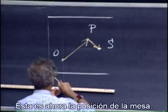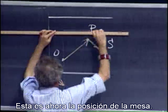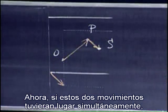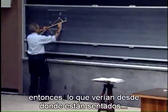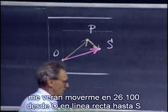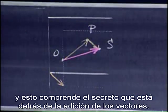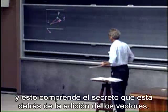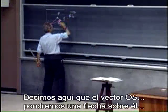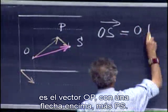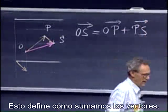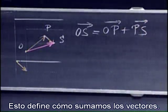This is now the position of the table — the whole table has shifted. If these two motions take place simultaneously, then what you will see from where you're sitting is me move in 26100 from O in a straight line to S. And this holds the secret behind the adding of vectors. We say here that the vector OS equals the vector OP plus PS. This defines how we add vectors.